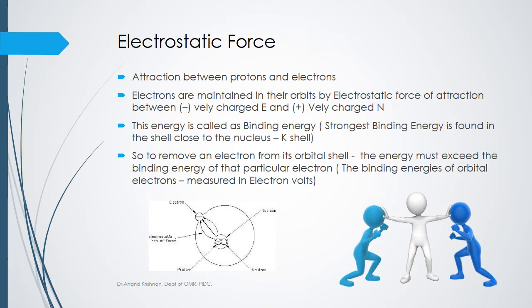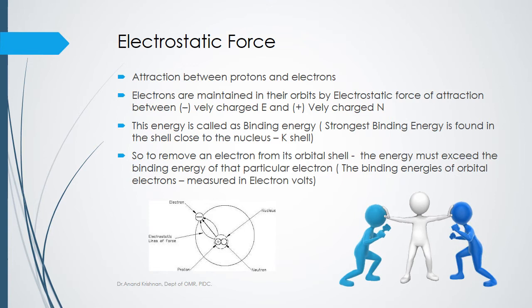The relevance of binding energy will become clear when we discuss characteristic and Bremsstrahlung radiation. Moving on to ionization — it is a process of converting an atom into ions. By definition, it is the process by which electrically neutral atoms or molecules are converted into electrically charged atoms or molecules.